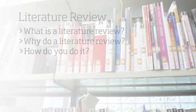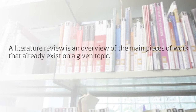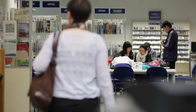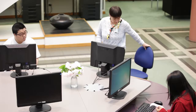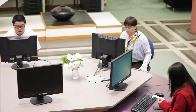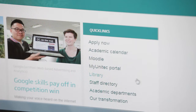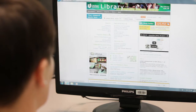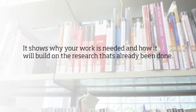A literature review is an overview of the main pieces of work that already exist on a given topic. The literature is analyzed and discussed by theme so that the reader can see the bigger picture. This also puts your research into context with the literature that is already out there, and by identifying the gaps that exist it shows why your work is needed and how it will build on the research that's already been done.